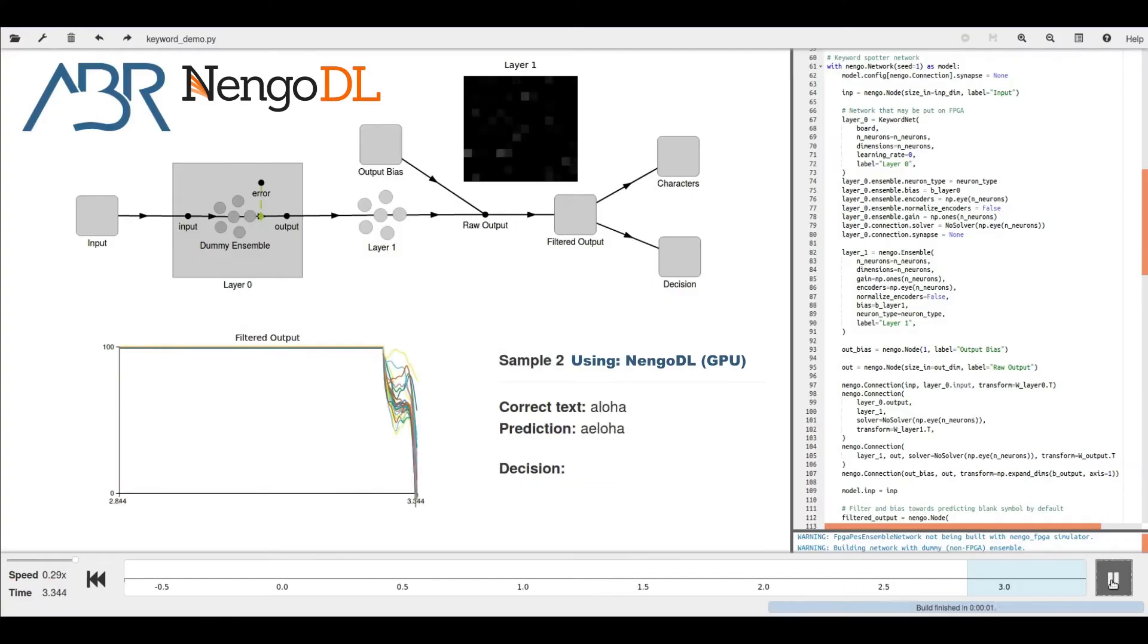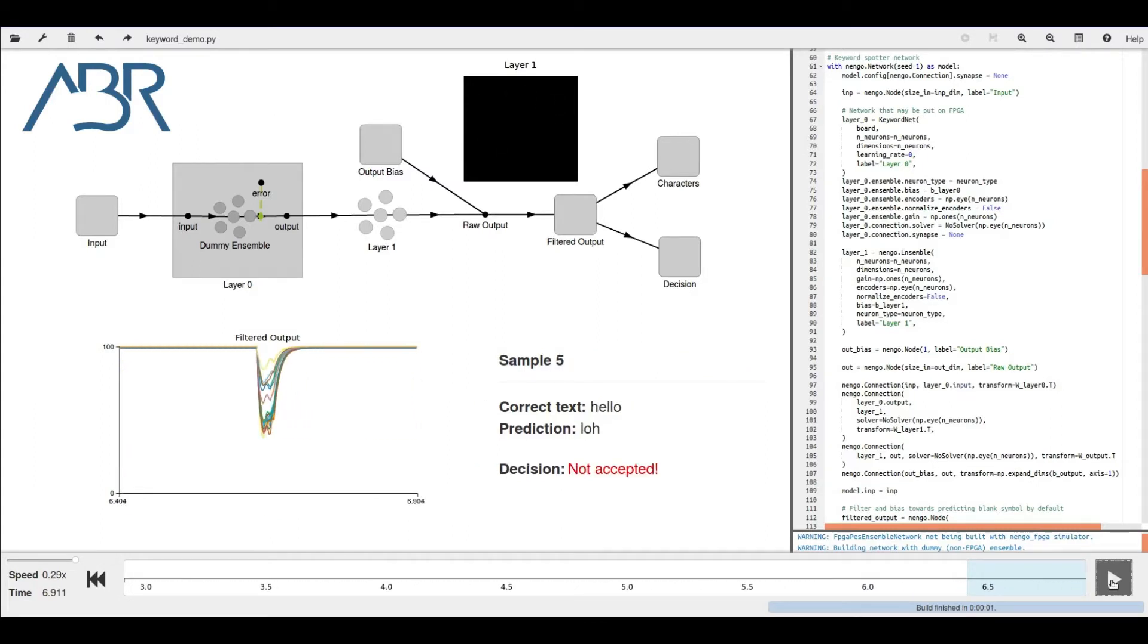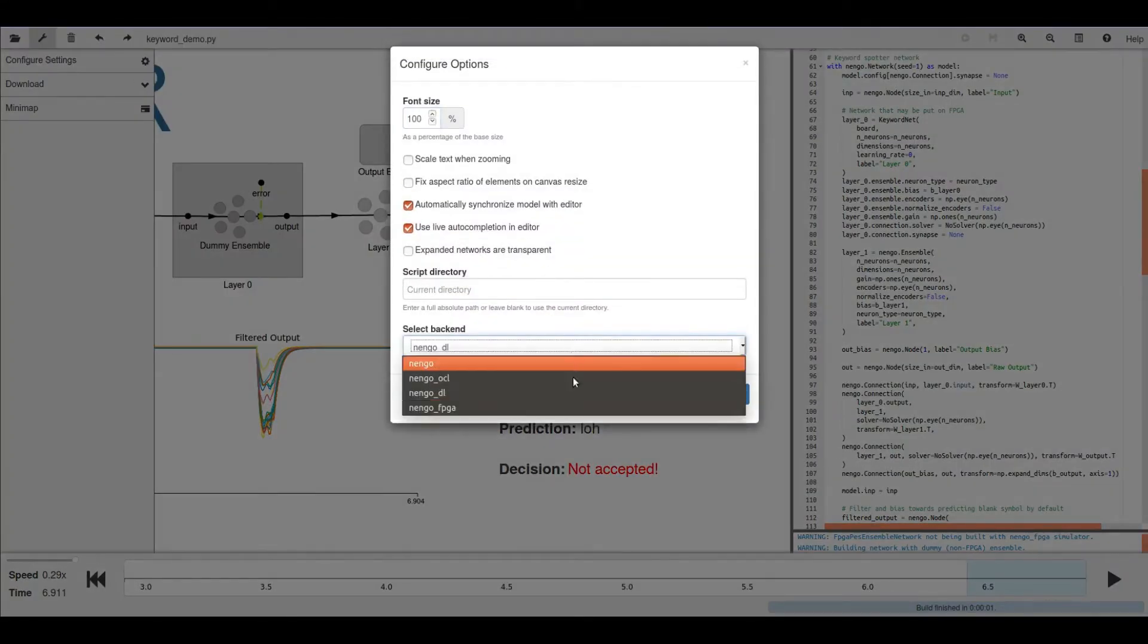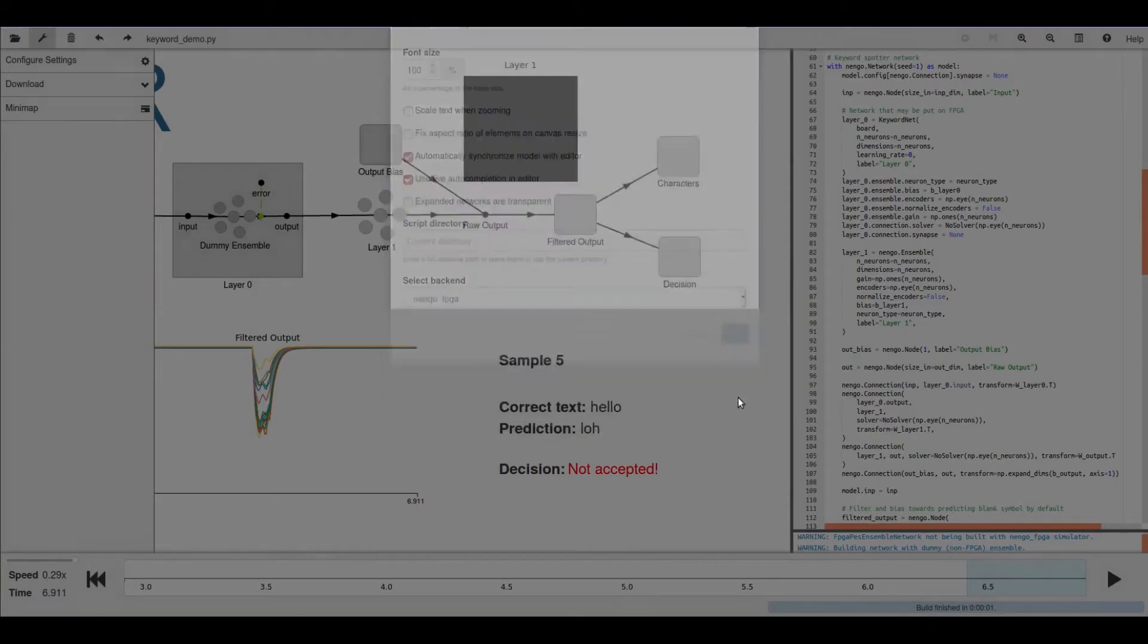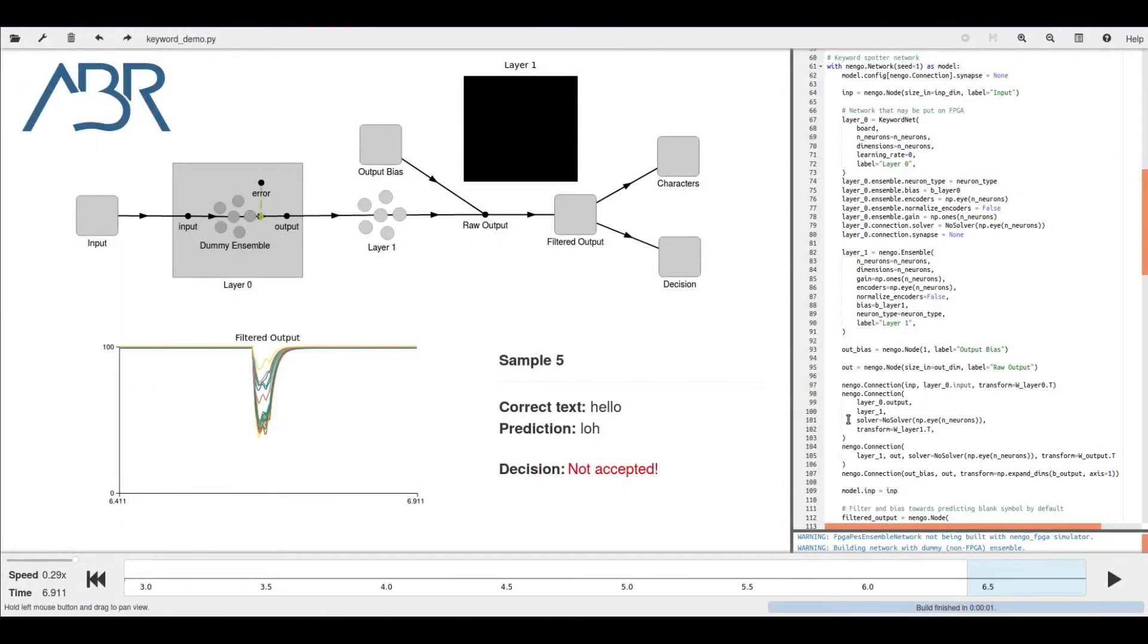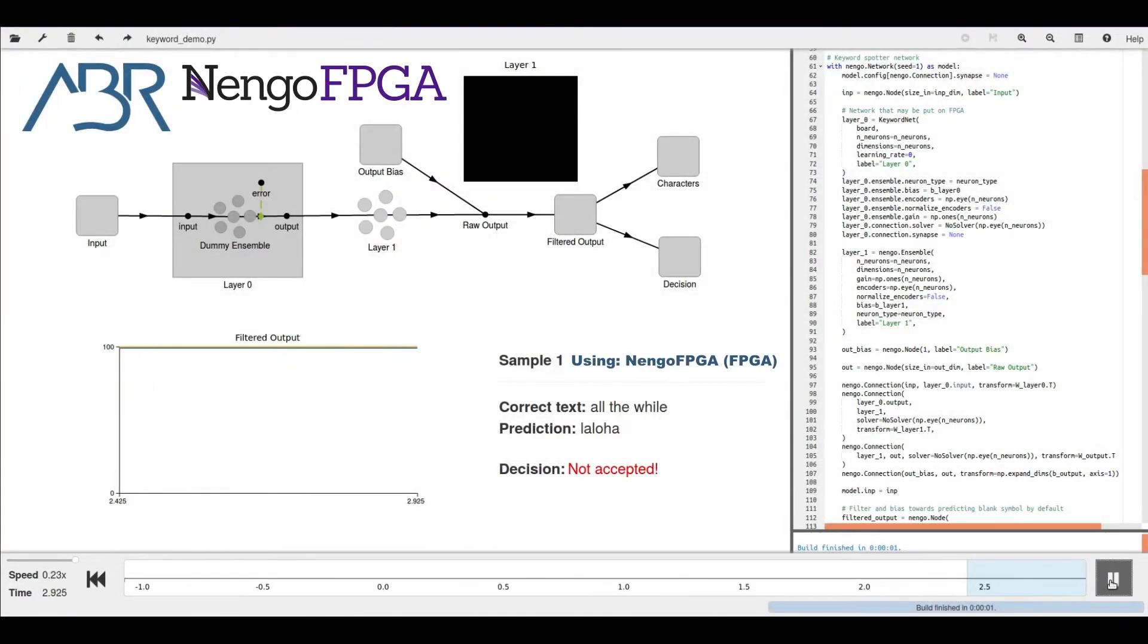This video shows what the process of changing backends looks like in the Nengo GUI, using the aforementioned keyword spotting network that's been trained to recognize the word aloha. So we're starting in NengoDL, which implements a TensorFlow backend, and then to change to run this network on Nengo FPGA, the user clicks Settings, Configure, and then chooses a backend from the list of available options. And then running this network on Nengo FPGA, we get the same performance on different hardware.